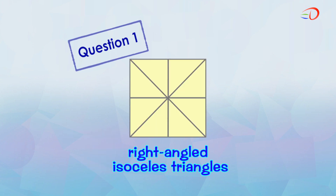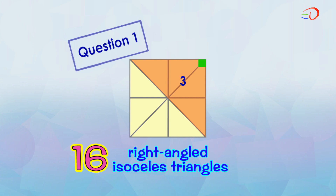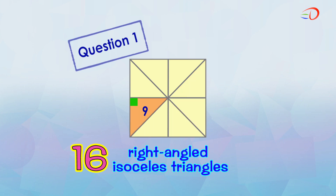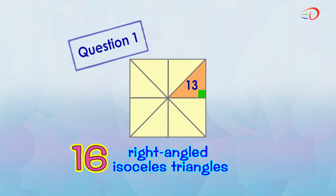How about right-angled isosceles triangles? Here are sixteen of them: one, two, three, four, five, six, seven, eight, nine, ten, eleven, twelve, thirteen, fourteen, fifteen, and sixteen.